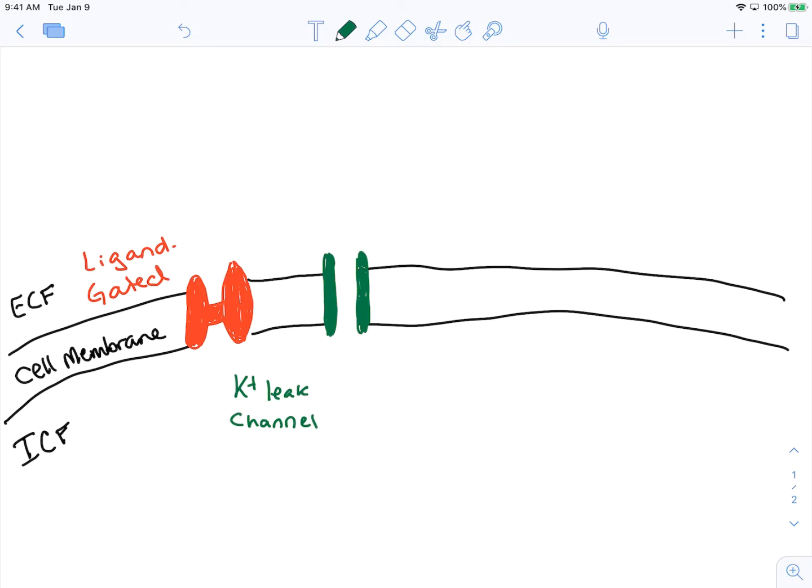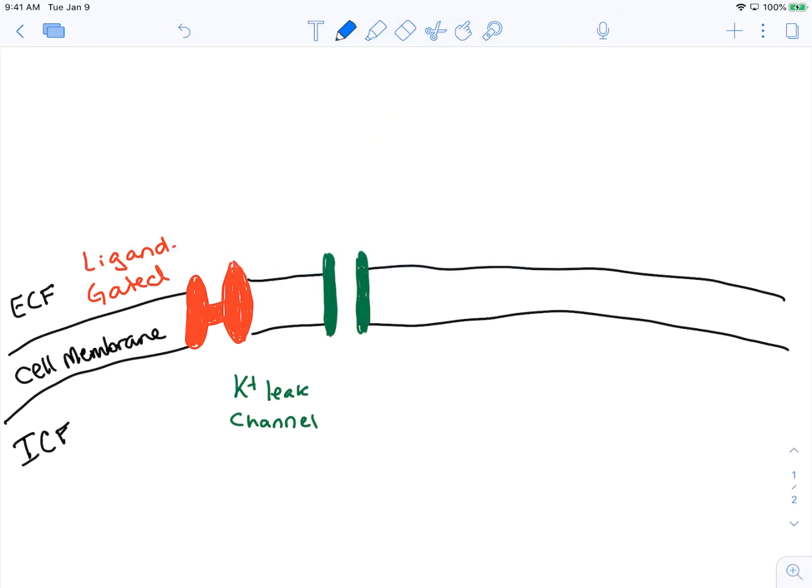As a consequence, this particular channel will allow for the ion potassium, which happens to be concentrated in the intracellular fluid, to escape into the extracellular fluid. Our potassium leak channel provides that pathway.